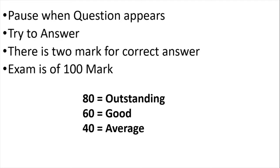There are two marks for each question and the exam is a total of 100 marks. If you are scoring between 40 and 60, your score is average and you need to give a lot more attention to Paper One. If you are scoring between 60 and 80, your score is good but you need to give a little attention. If you are scoring 80 and above, your score is outstanding and you can now focus on Paper Two.